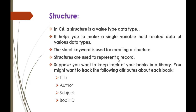For example, if you want to keep track of your books in a library, you might want to identify a book by its title, author, subject, and book ID. These four things — title, author, subject, and book ID — can all be attached to a single variable.